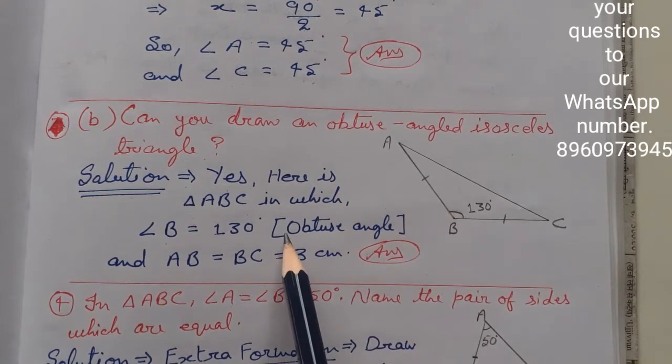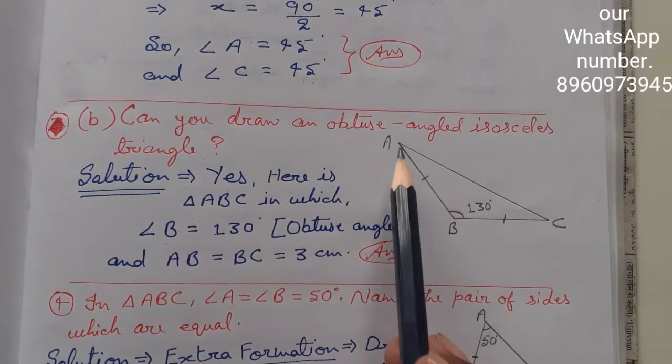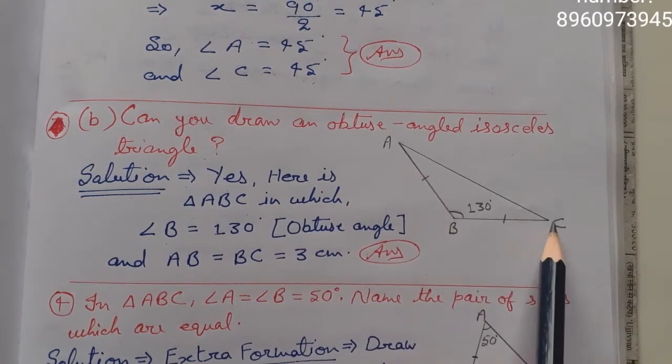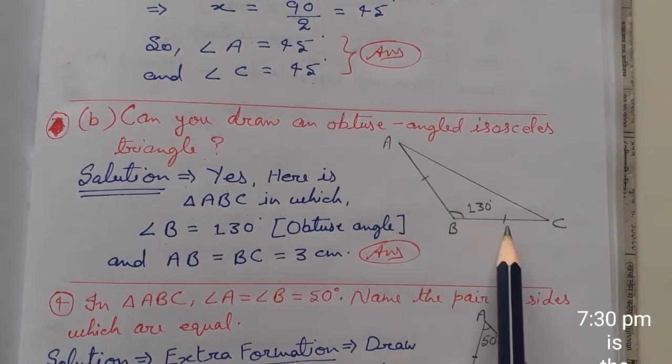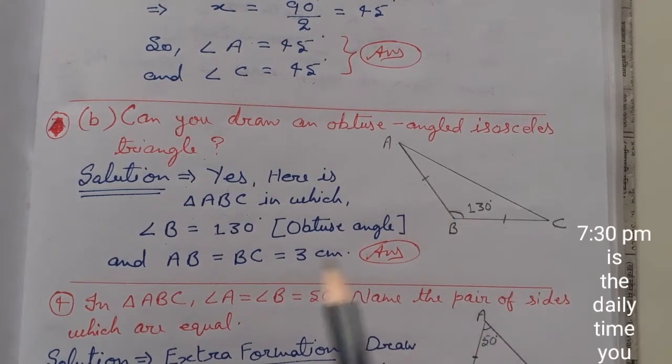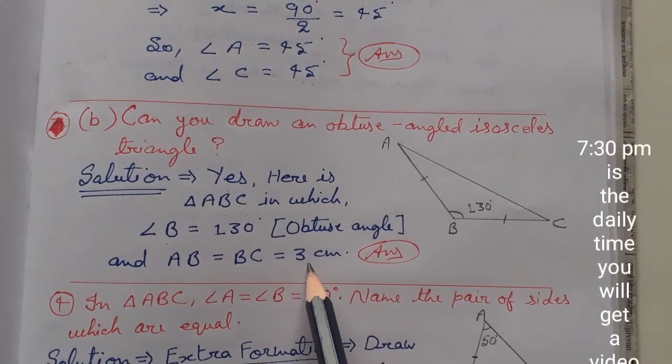Then it will be isosceles and we can do this with AB equal to BC. And AB equals BC equals 3 centimeters.